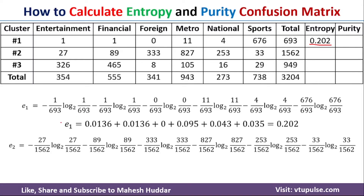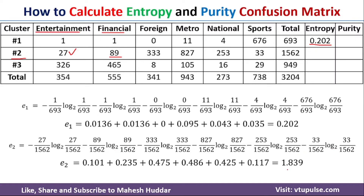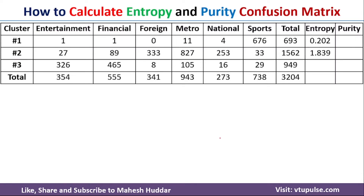For the second cluster, E2: the number of Entertainment objects in Cluster 2 is 27, so we have minus (27/1562) log base 2 (27/1562), minus (89/1562) log base 2 (89/1562) for Financial, and similarly for the remaining classes. Once you solve this equation, you get 1.839 as the entropy for Cluster 2.